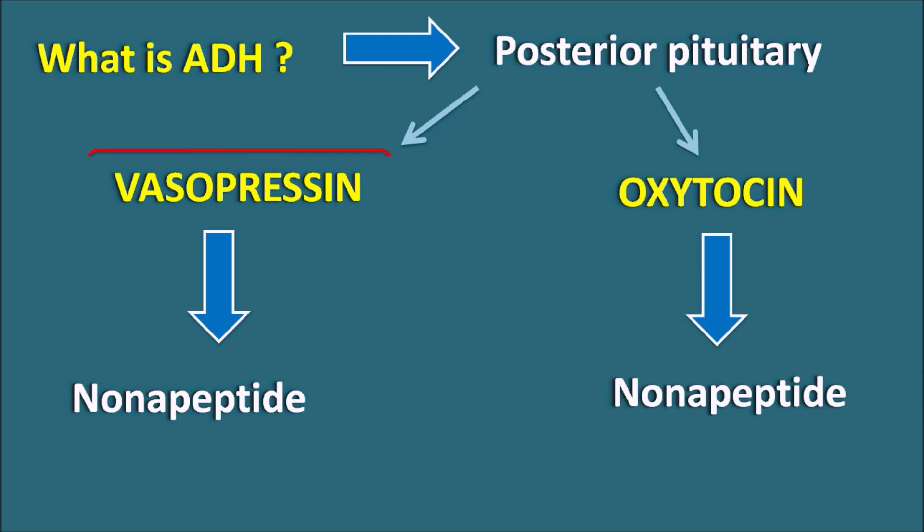Vasopressin mainly acts as the anti-diuretic hormone. Today in this video we will discuss the different types of anti-diuretic hormones, how they are going to act, and what are the side effects of these anti-diuretic hormones.